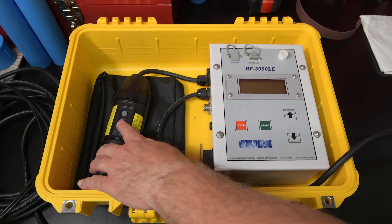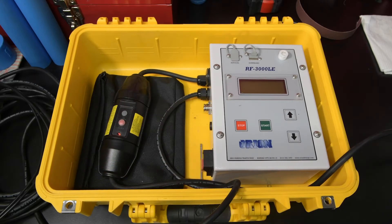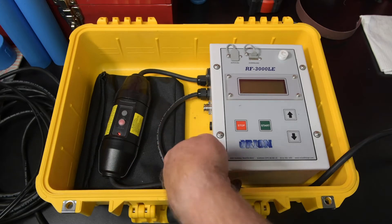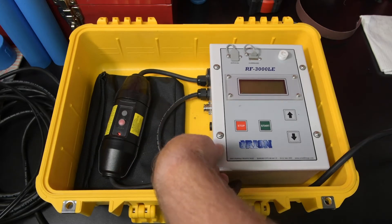Plug the Orion Fuser into a dedicated power source and start up the system. At startup, the unit will perform a self-test to confirm the system is calibrated.